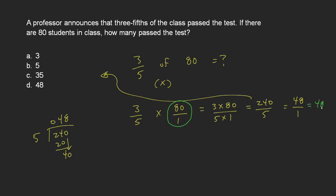Because if I wanted to turn 48 into a fraction, I would put it over one. That doesn't change it. 48 over one is the same as saying 48. So my answer here is D, 48.